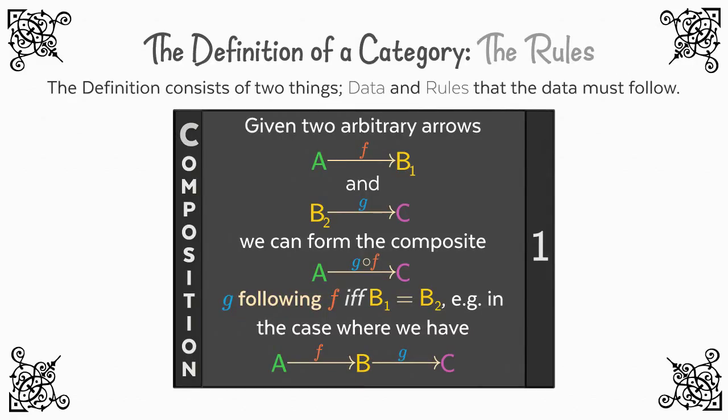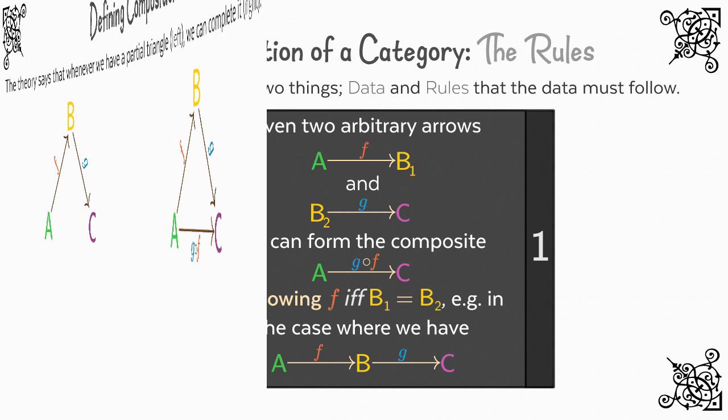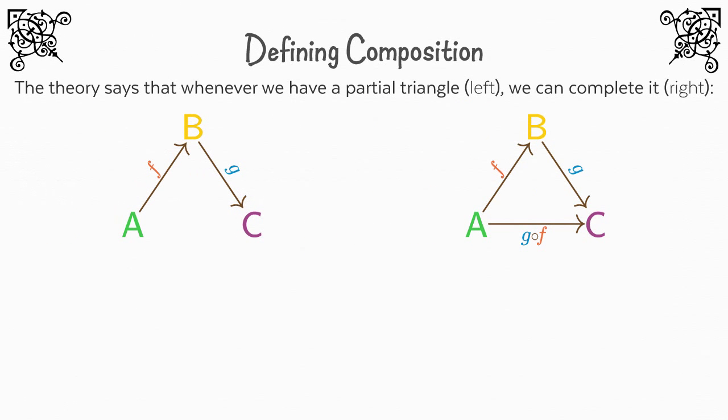Let's look at that definition again. It says that if we have an arrow F from A to B1 and an arrow G from B2 to C, then we can form the composite if and only if B1 equals B2. Looking at the diagram on the bottom, the theory says that whenever we have a partial diagram like this, we can complete it by drawing an arrow at the bottom that represents the result of applying F then applying G — G following F.